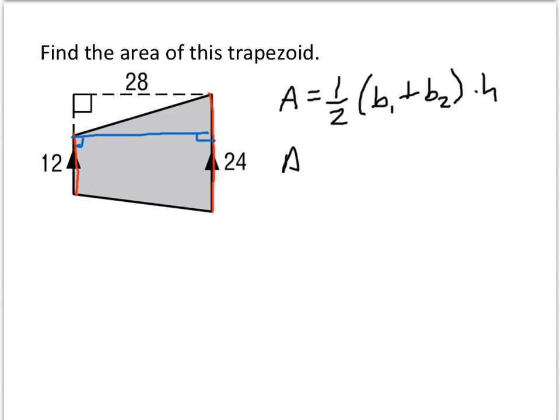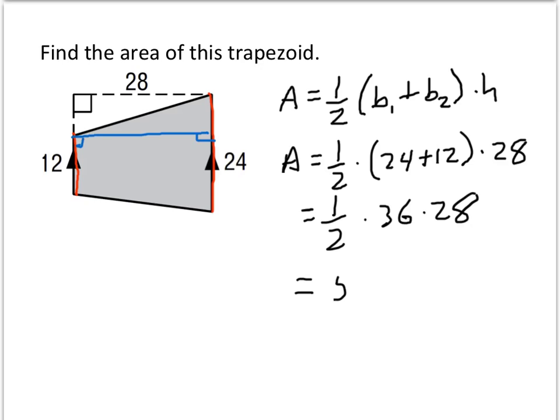So our area is 1/2 times 24 plus 12, the two bases, times the height, which is 28. We have 1/2 times 36 times 28, which, if you grab a calculator, equals 504 square units.